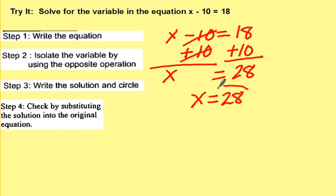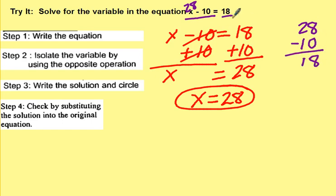Write nice and neat. x equals 28. And circle. Now to show your check step, we're going to stick the 28 back up in our original equation and work it out. 28 minus 10 is 18. Did we get what we wanted? Yes. So that's your check step.